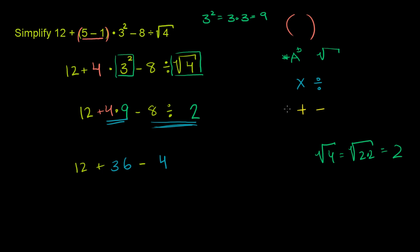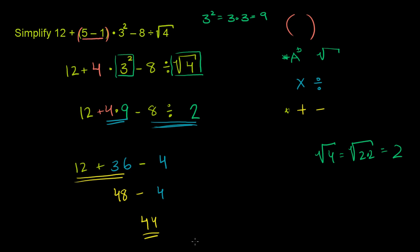Now we're finally at the addition and subtraction stage. 12 plus 36 is 48. So we have 48 minus 4. And when you evaluate that, 48 minus 4 is 44. And we're all done.